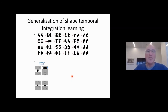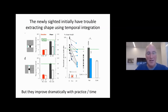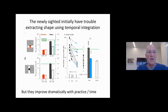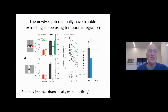The next thing we wanted to make sure was that they do this through actual integration, not a different strategy. Maybe they're comparing the interval until the horizontal element comes versus the interval after, and saying which one is shorter — using two interval measurements to tell if it's an upright or inverted cross without actually doing temporal integration to discover shape. To deal with this, we decided to use a completely new approach.